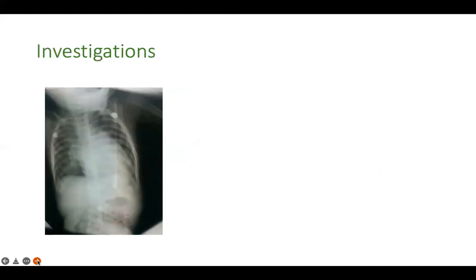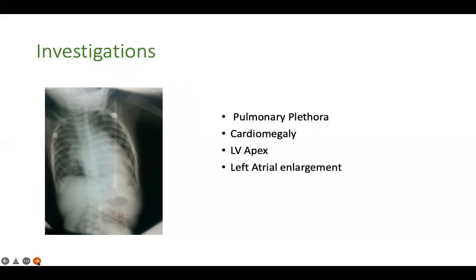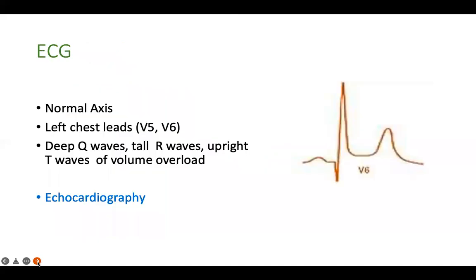On X-ray, there is cardiomegaly, pulmonary plethora if there is venous congestion in the lungs, an LV-type apex, and left atrial enlargement. ECG typically shows normal axis. Since everything abnormal in PDA happens on the left side, in the left chest leads V5 and V6, you find a deep Q wave, tall R wave, and upright T wave — all indicative of volume overload. The definitive diagnosis is made by echocardiography, which demonstrates the patent ductus arteriosus.